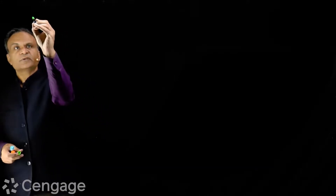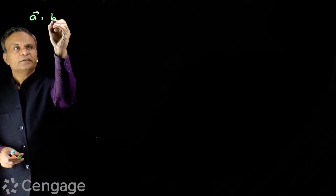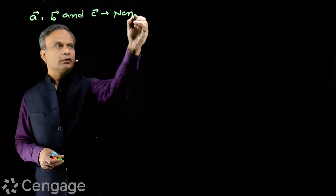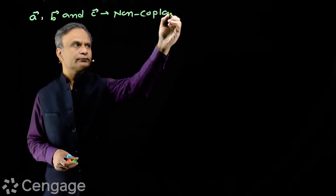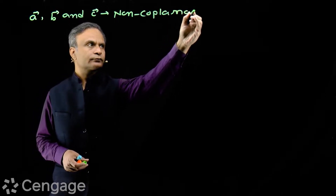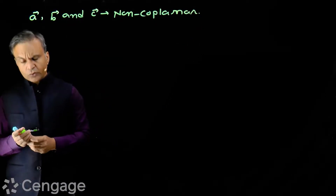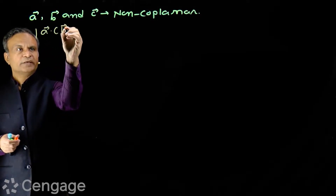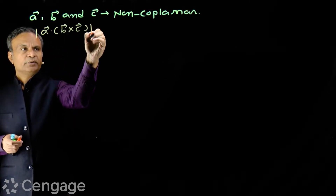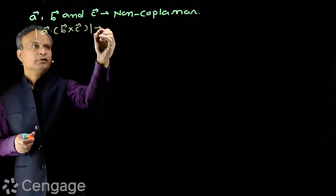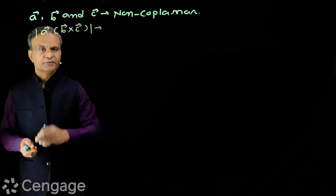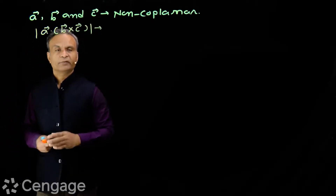Here also, we have some geometrical interpretations. For that, we consider three non-coplanar vectors A, B, and C. The modulus of the scalar triple product — A dot (B cross C) — will be the volume of the parallelepiped formed by vectors A, B, and C.